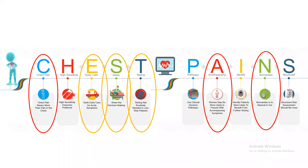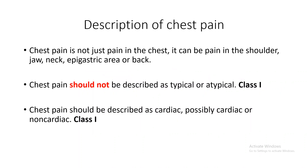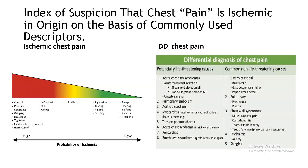The description of chest pain — it is not just pain in the chest. It can be in the shoulder, jaw, neck, epigastric area, or back. It should not be described as typical or atypical. We now say cardiac, probably cardiac, or non-cardiac — and this is a class one indication. There is a very nice graph showing the probability of ischemia according to the character of the chest pain and its differential diagnosis.